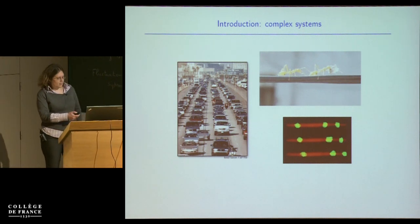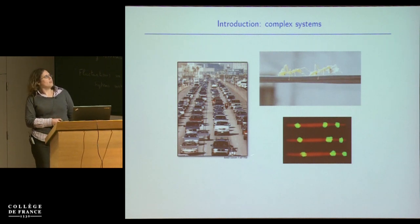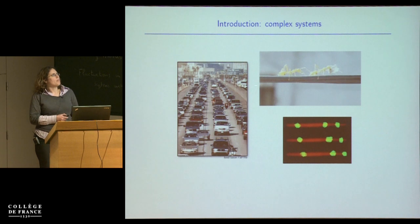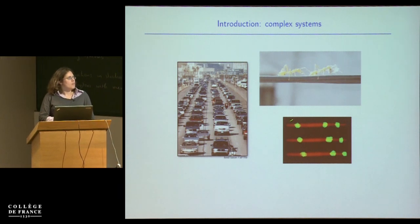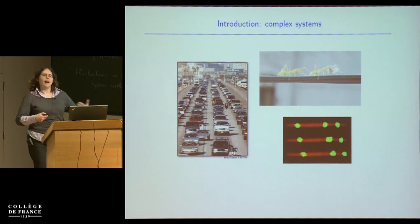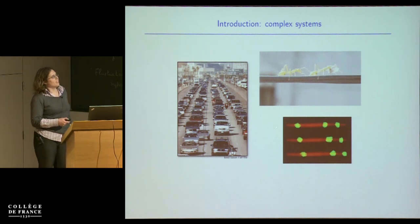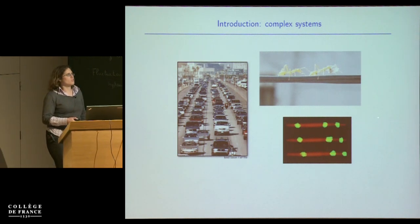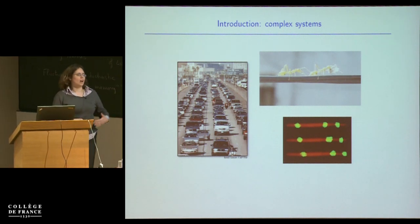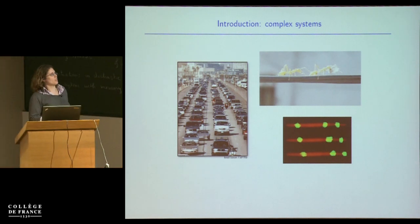By way of motivation, let's look at these various pictures of different complex systems. We have cars on a highway in Los Angeles with many lanes of traffic. Top right, we have ants moving along a cable. The bottom right picture is also a kind of transport process — the transport that goes on inside your cells. The red thing is a microtubule or filament, a track, and the green blobs are molecular motors which walk along that track and carry things from one side of your cell to the other.